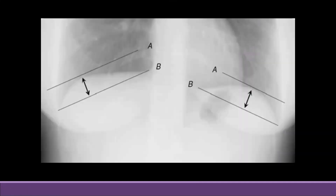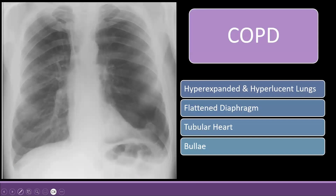To check for flattening of the diaphragm, draw a line from the posterior costophrenic angle to the cardiophrenic angle, then measure the highest point of the diaphragm from this line. If the measurement is less than 1.5 cm, that means the diaphragm has flattened. This is a more sensitive sign of hyperinflation compared to just counting ribs.